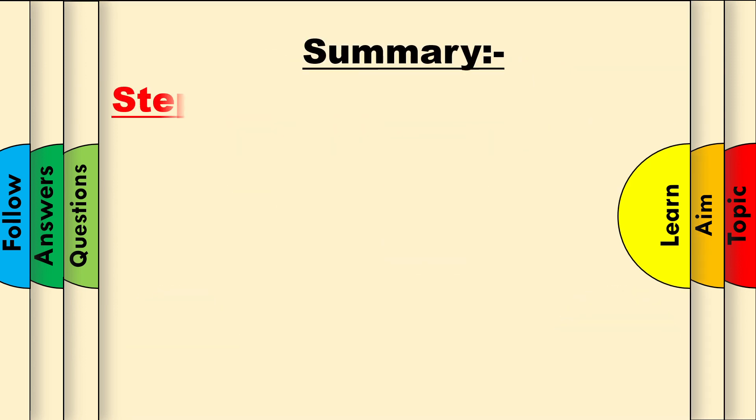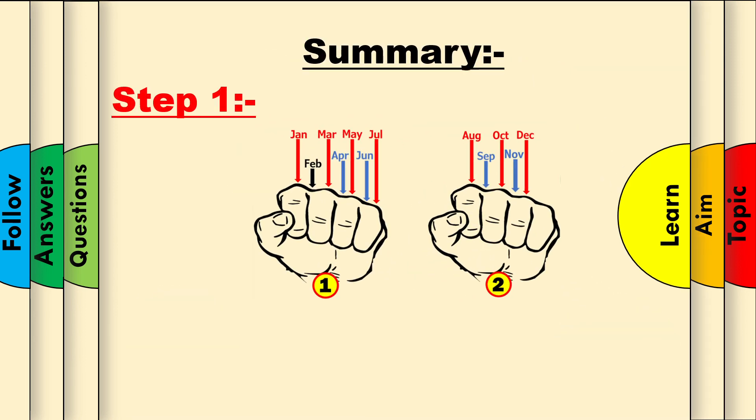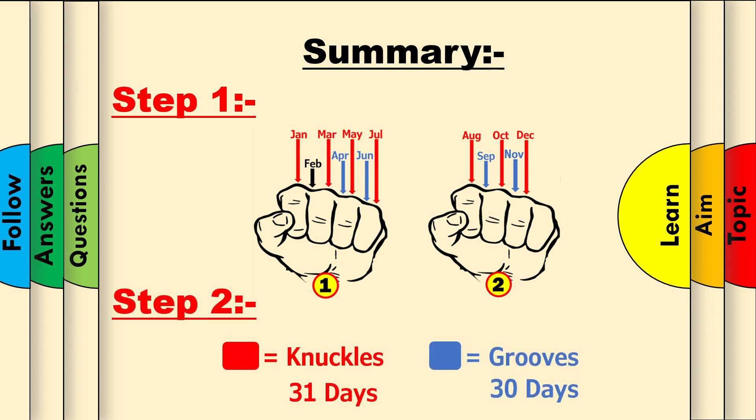Summary. Step 1: Use your fist to count the months. Step 2: Knuckles have 31 days and grooves have 30 days.